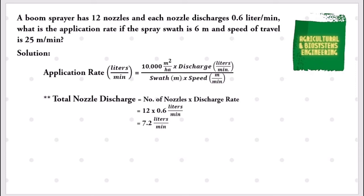After identifying the value for our total discharge, we can now solve for our application rate. Again, we substitute the values since we already identify each of them. We now have application rate in liters per minute equals 10,000 square meters per hectare multiplied by the total nozzle discharge that we solved a while ago, which is 7.2 liters per minute, all over 6 meters multiplied by 25 meters per minute.